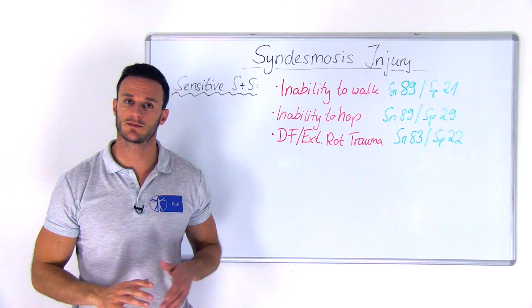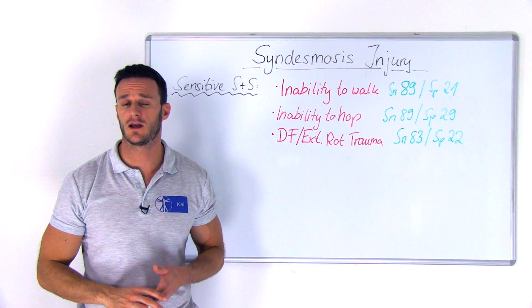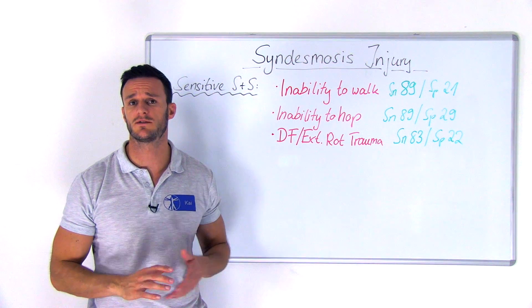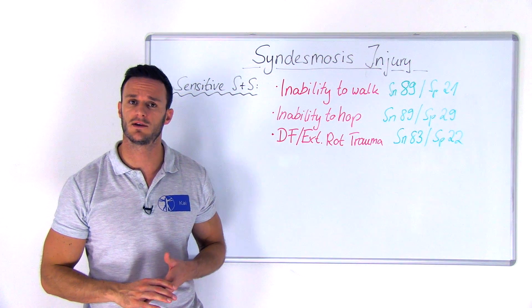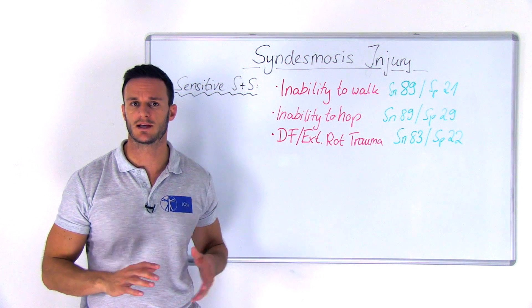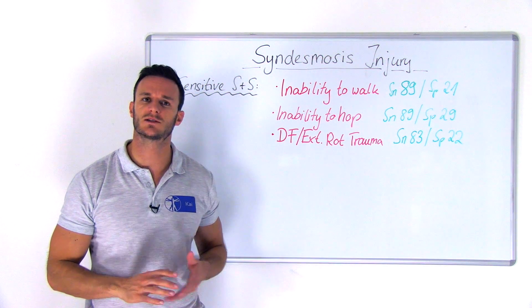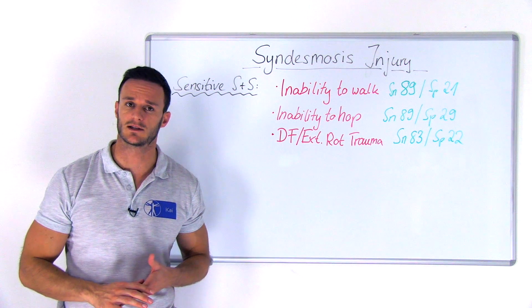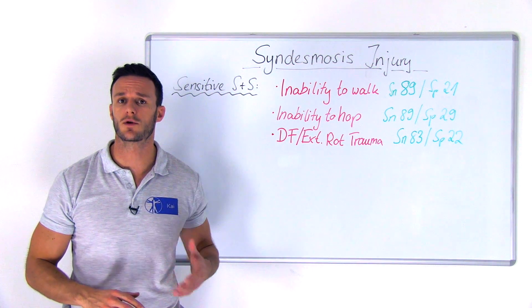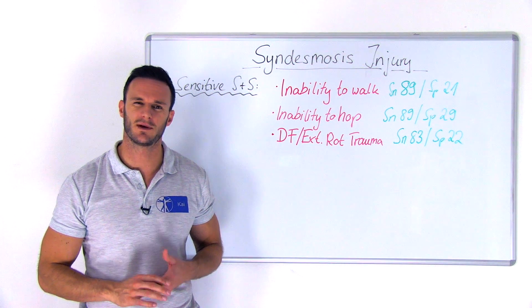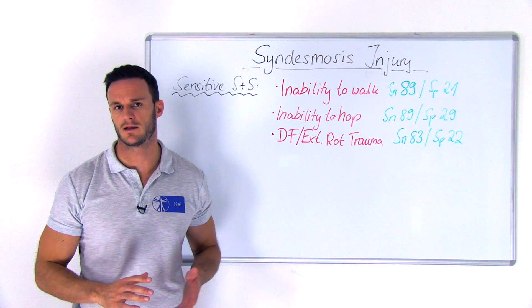And the mechanism of injury involved dorsiflexion and external rotation, with a sensitivity of 83% and a specificity of 22%. With the syndesmosis as an important stabilizer, it seems logical that patients are having problems during walking and especially hopping when their ankle stability is impaired.